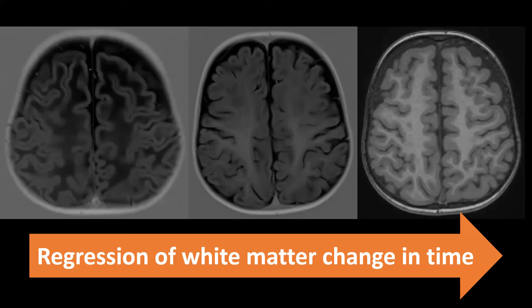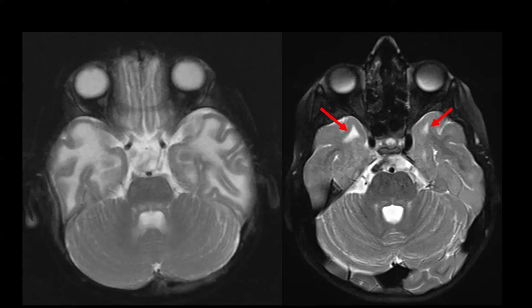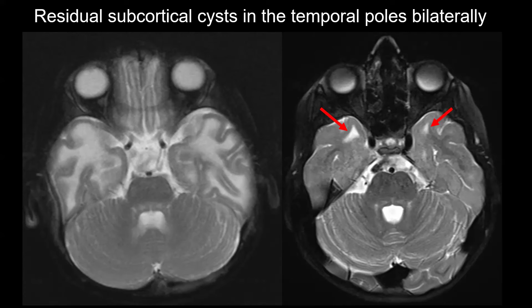The disease is called megalencephalic leukoencephalopathy with subcortical cysts — we have megalencephaly, leukoencephalopathy, and we haven't seen the subcortical cysts yet. These can often be seen especially in the temporal poles, but also in the frontal and parietal lobes. They may not be visible when there are diffuse white matter abnormalities masking them, but on one of the follow-up MRIs we can see signal abnormalities in the typical location of the cysts in this disease entity.